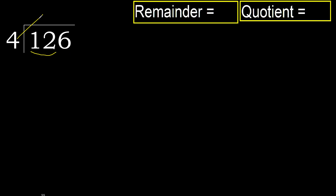4 multiplied by 4 is 16 — 16 is greater. Multiply by 3: 12 is not greater. 12 minus 12 equals 0.